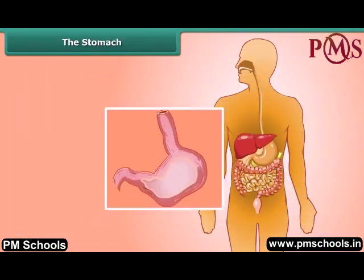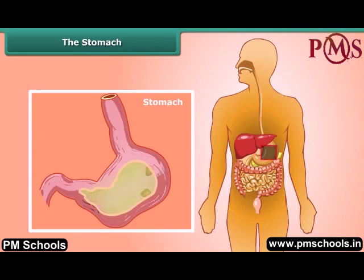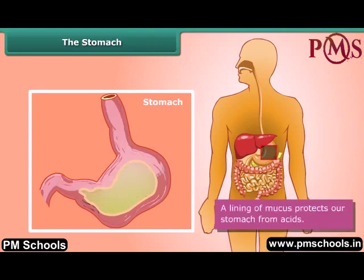The stomach is the widest part of the alimentary canal. It is a thick-walled bag with a flattened U-shape. Inside the stomach, food is churned and mixed with digestive juices including hydrochloric acid. These chemicals break down the proteins into simpler substances. A lining of mucus protects our stomach from the acids.